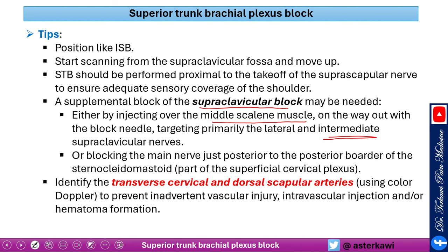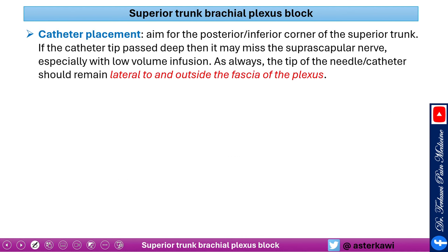It is crucial in this block to identify the transverse cervical and dorsal scapular arteries using color Doppler to prevent inadvertent injury and intravascular injection. When placing a catheter, aim for the posterior inferior corner of the superior trunk. If the catheter tip passes too deep, it may miss the suprascapular nerve, especially with lower-volume infusions. As always, the tip of the needle or catheter should remain lateral and outside the fascia of the plexus.